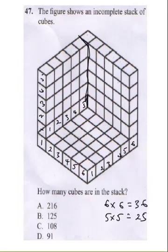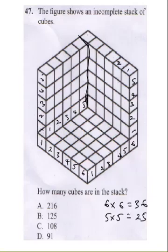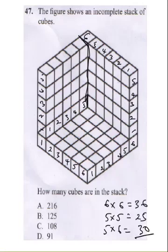Now let's count the final layer. Down to the end, here will be 1, 2, 3, 4, and 5. And here will be 1, 2, 3, 4, 5, and 6. So this would be 5 times 6, which gives us 30. When you sum this up — 36 plus 25 plus 30 — this gives you 91. So the correct answer here is 91.